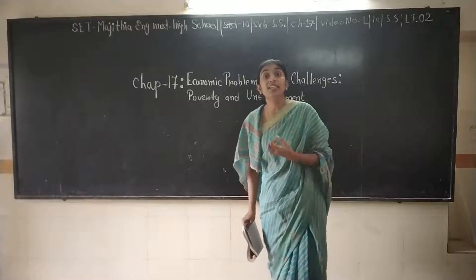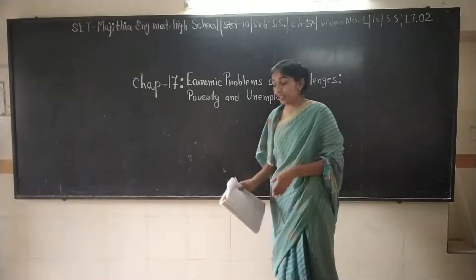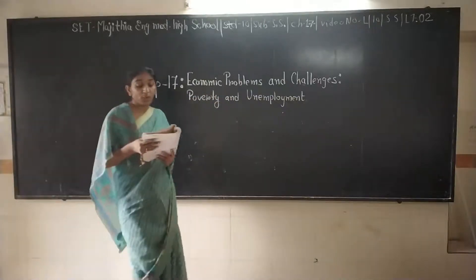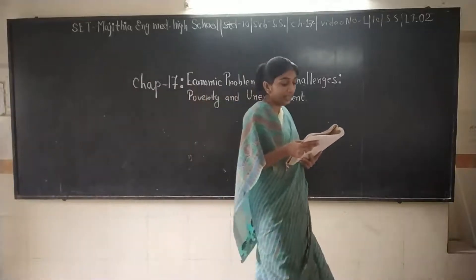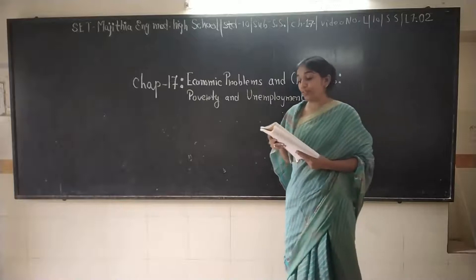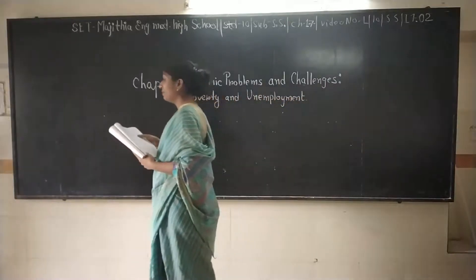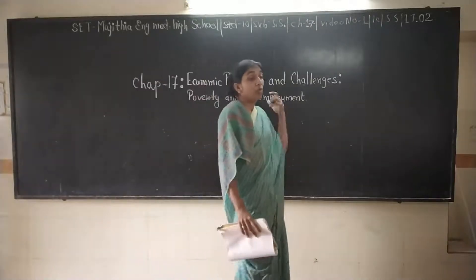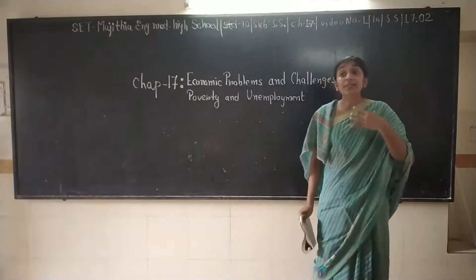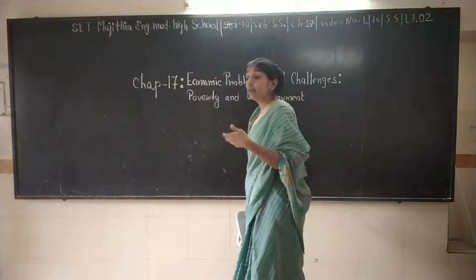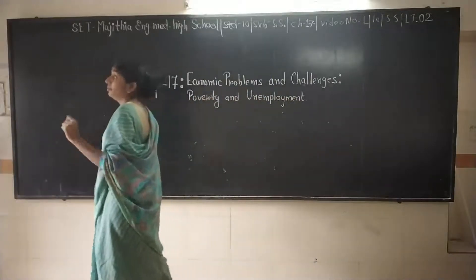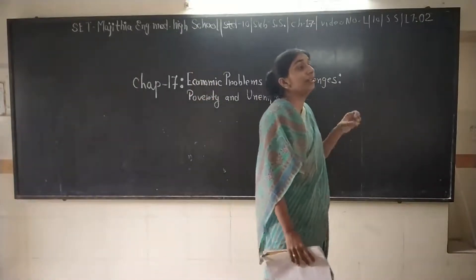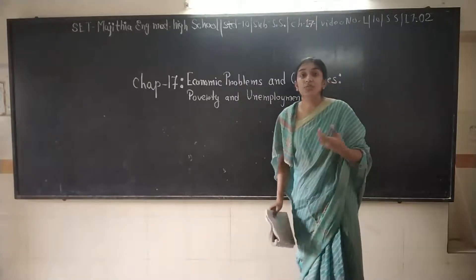Due to illiteracy, the poor become victims of exploitation and injustice. Along with that, they are not able to get proper benefit of government schemes because of lack of information. Because they are illiterate, they do not know what kind of programs and schemes are available, and even if they know, they won't be able to get benefit from them. And because they are illiterate, everybody takes advantage of them, which is called exploitation.